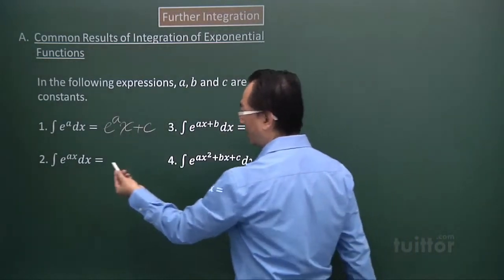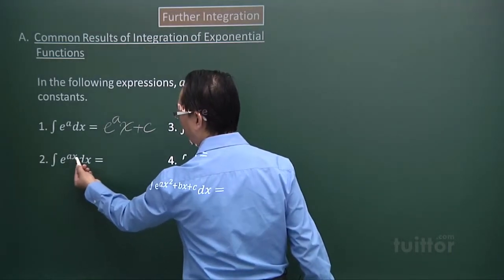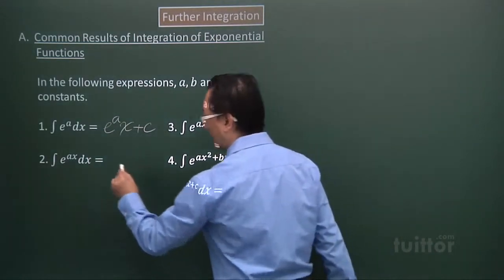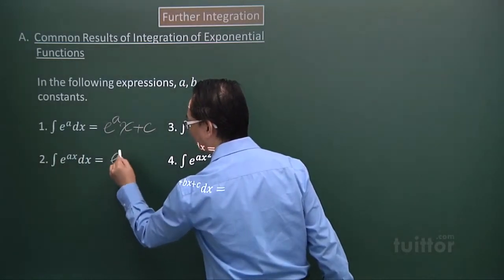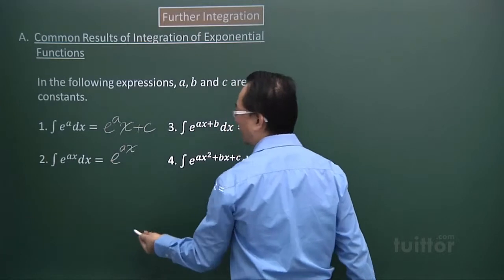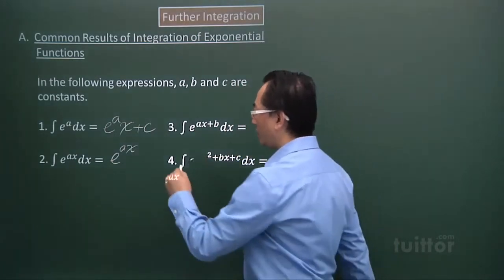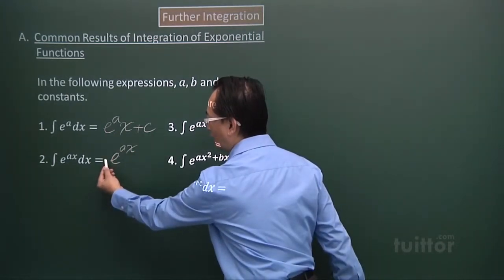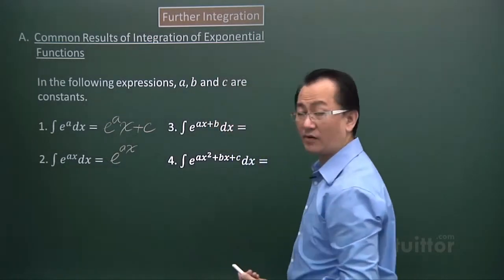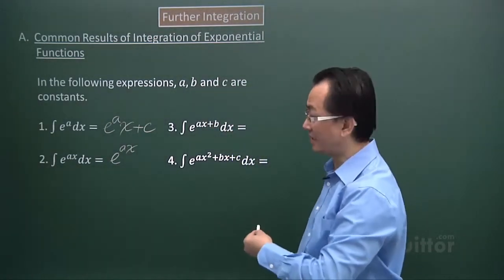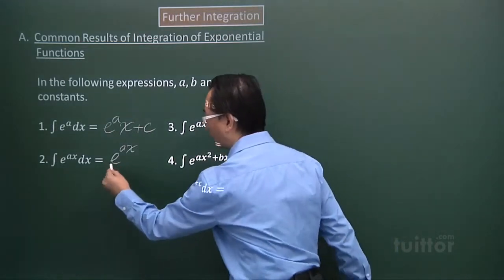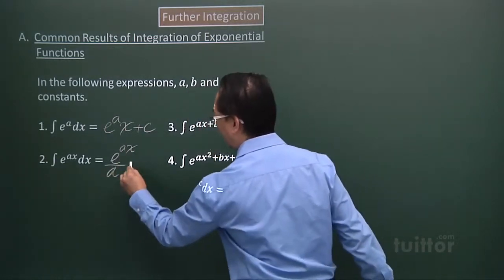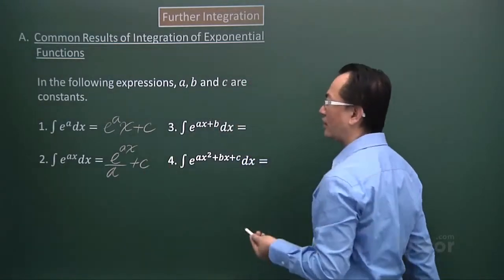Next, I have e to the power of Ax to integrate. As always with the exponential function, I rewrite that. Instead of putting the result of differentiation of the index as a multiplier — as we would for differentiation — for integration I place that result in the denominator. Then I always add the arbitrary constant C.